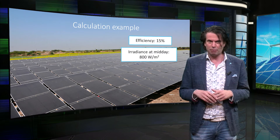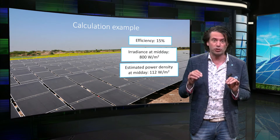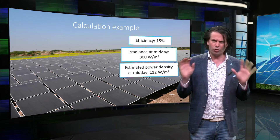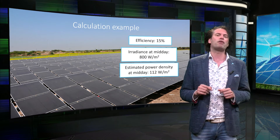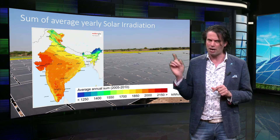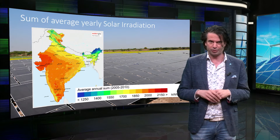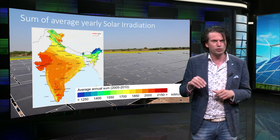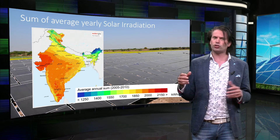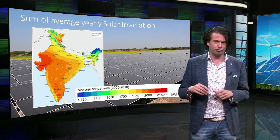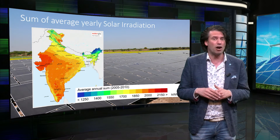If we multiply this by the system efficiency, we find an achieved power density of 112 watts per square meter at noon. Note that this is not the average power density for an entire day. To calculate the average power density per day, we can use this map of India, which shows the average yearly solar irradiation across the country. The Gujarat Solar Park is situated on the top of the west coast of India and has a very high yearly irradiance of 2100 kWh per square meter.